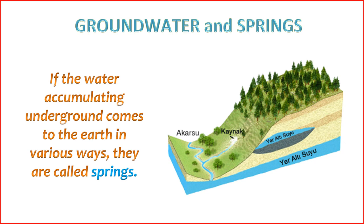10. Preservation Challenges — human activities, including groundwater extraction and land use changes, can impact the flow and sustainability of springs. It is crucial to manage and protect these natural water sources. Springs contribute to the hydrological cycle by redistributing water from the subsurface to the surface, and they play a critical role in maintaining the overall health of ecosystems and supporting human activities.